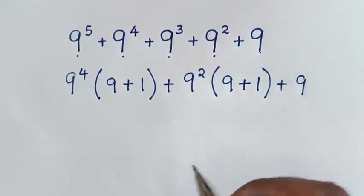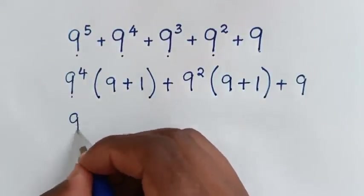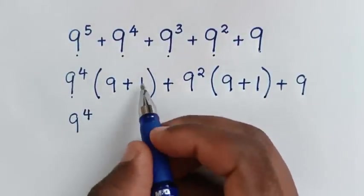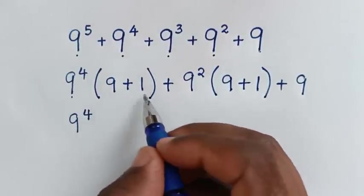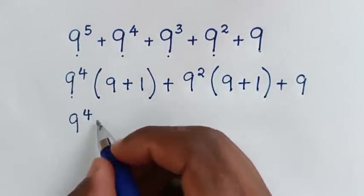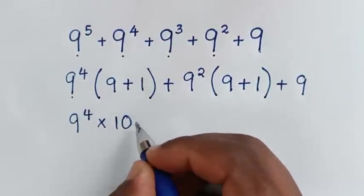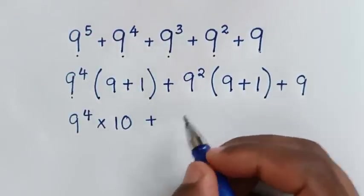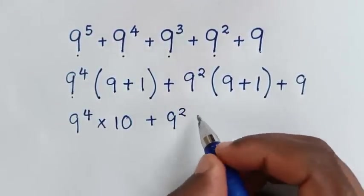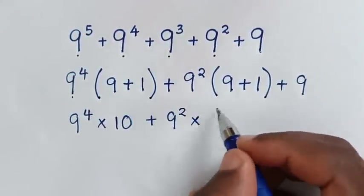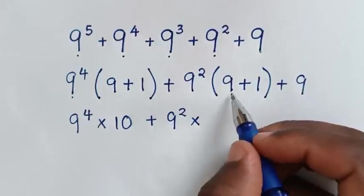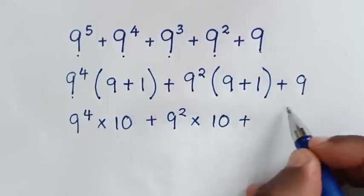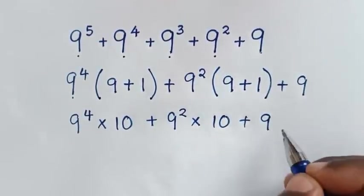Then in the next step, we have 9 power 4 — we solve inside the bracket: 9 plus 1 is 10, so it will be times 10. Then plus 9 power 2, then times inside the bracket: 9 plus 1 is 10, then plus this 9.